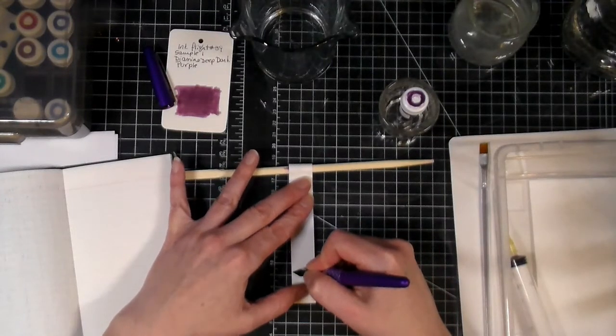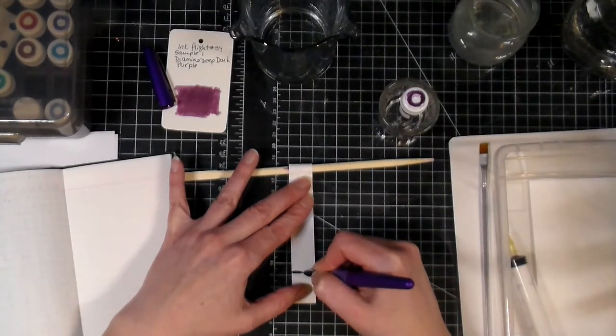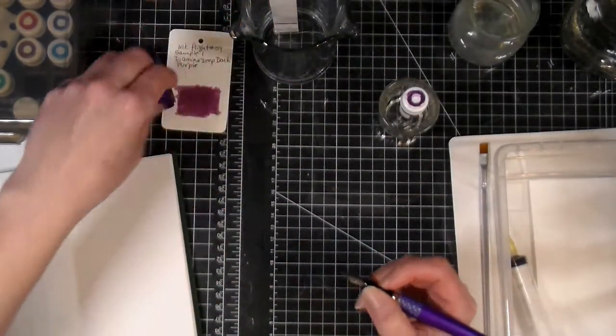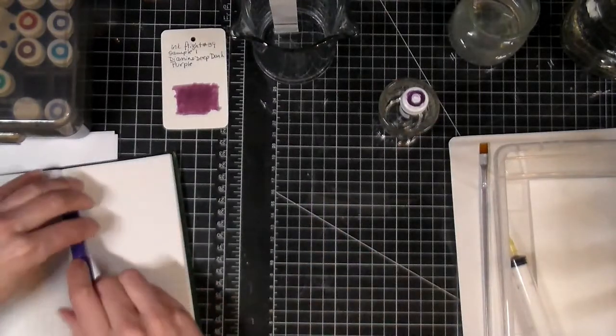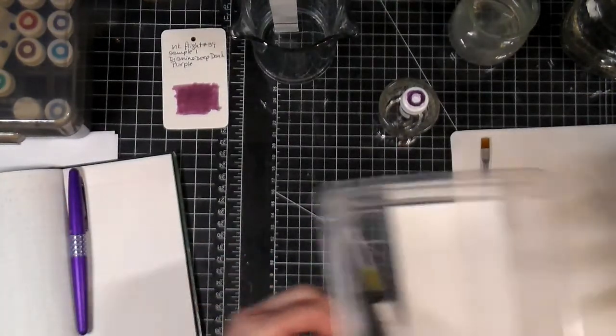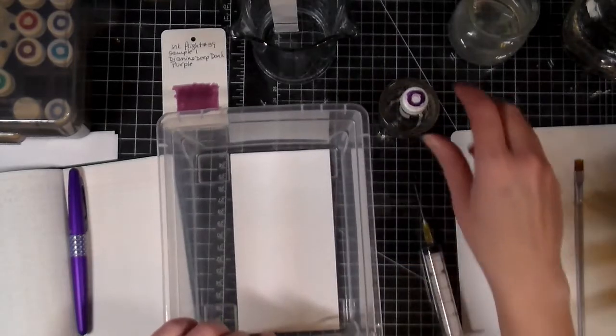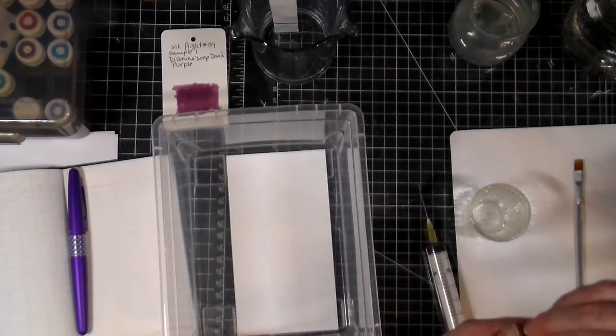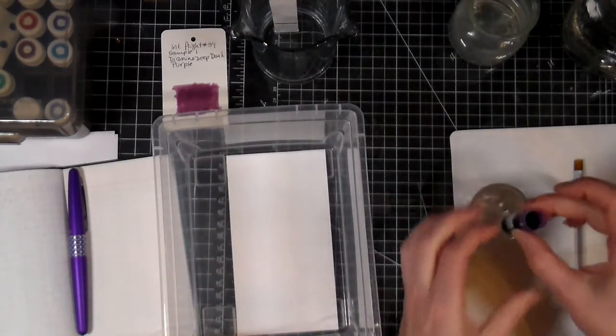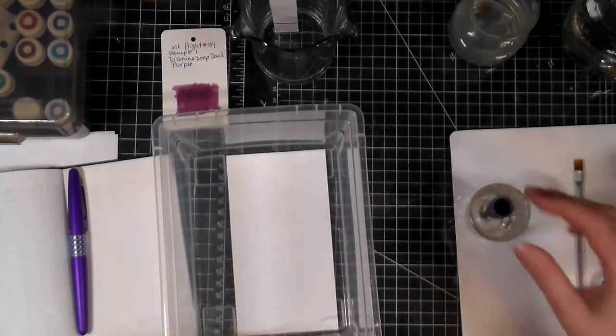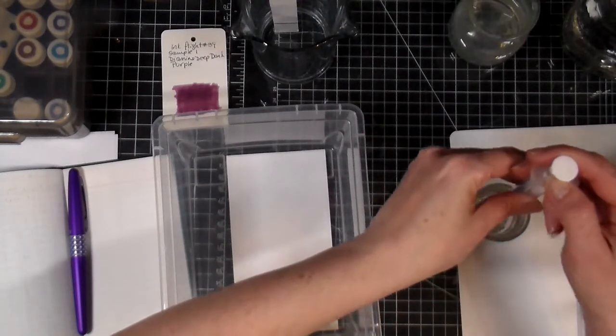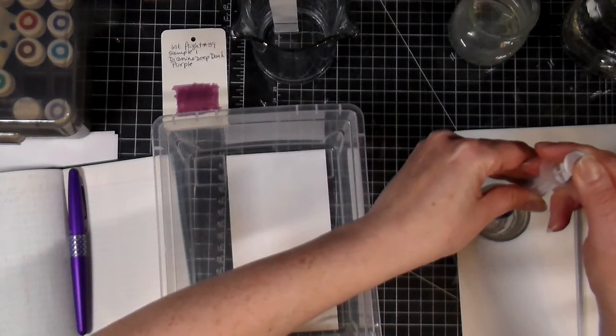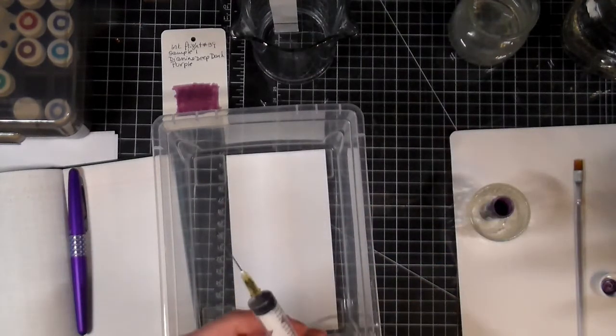So let's do the chromatography and then we can see how that goes. I inked it up before so that I wouldn't be taking so much time trying to ink it up. Now we'll do the splotches and everything. It's very dark, well and the fact that it's called deep dark purple I guess it makes sense right.